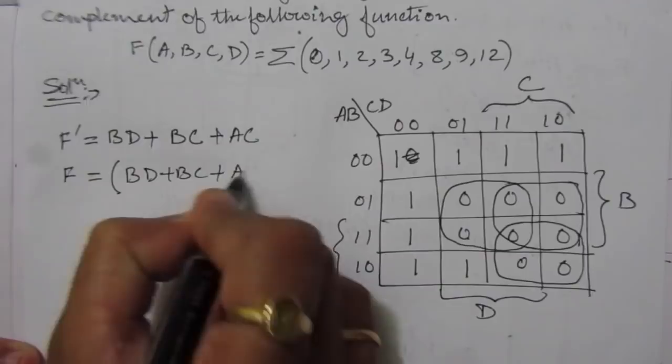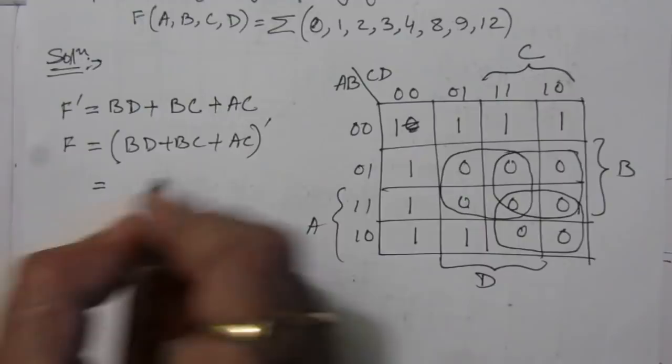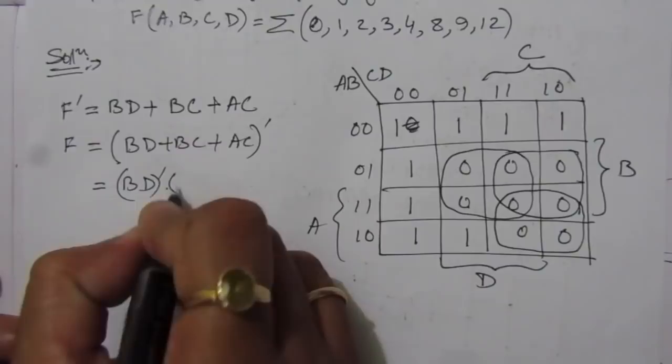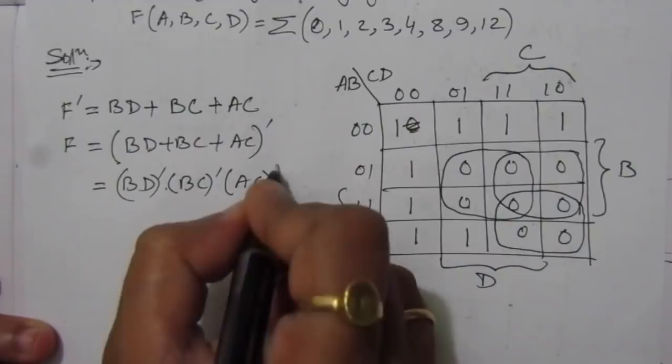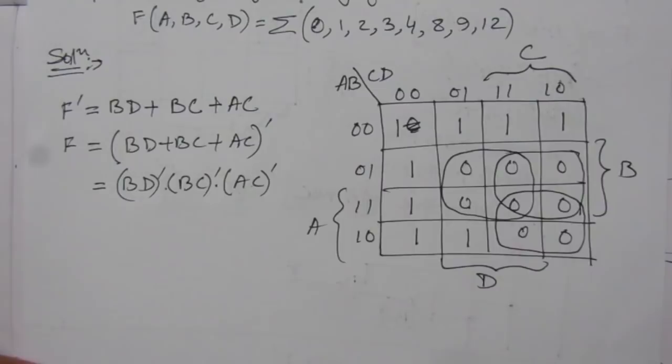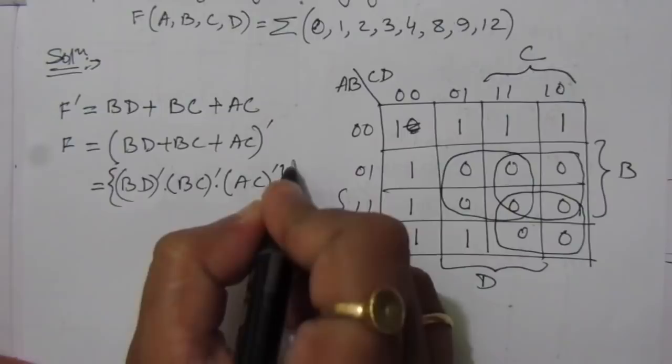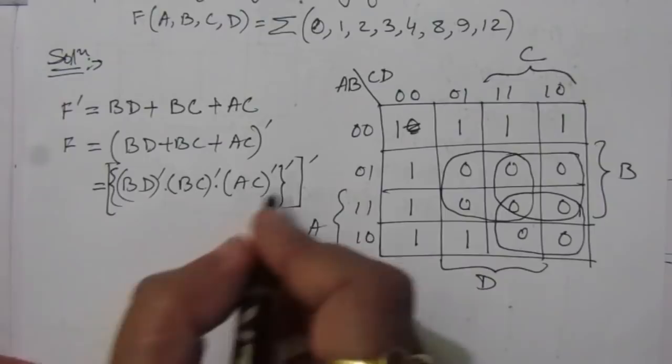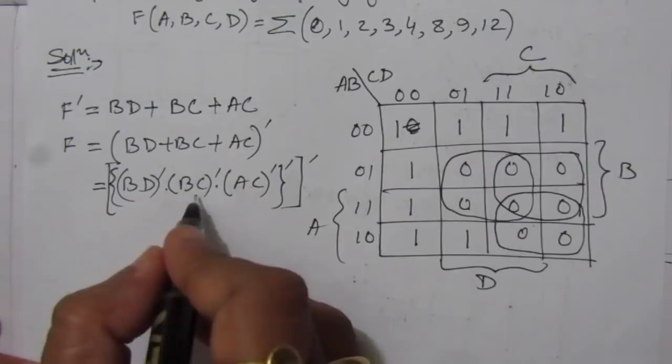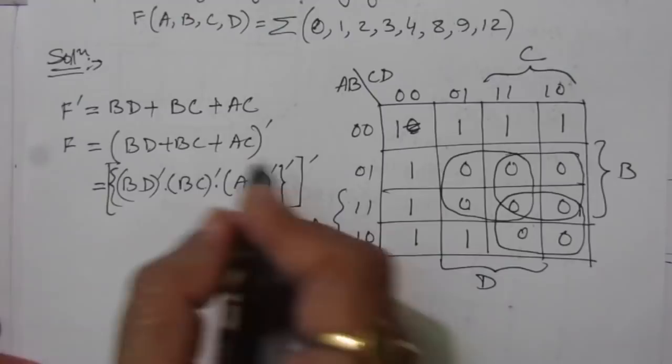We apply De Morgan's theorem and get: BD̄ · BC̄ · AC̄. To obtain the whole complement function, we can take two complements — one complement and another complement. This means we can use a NAND gate structure, because after getting these three product terms we need another NAND gate to complete the function.